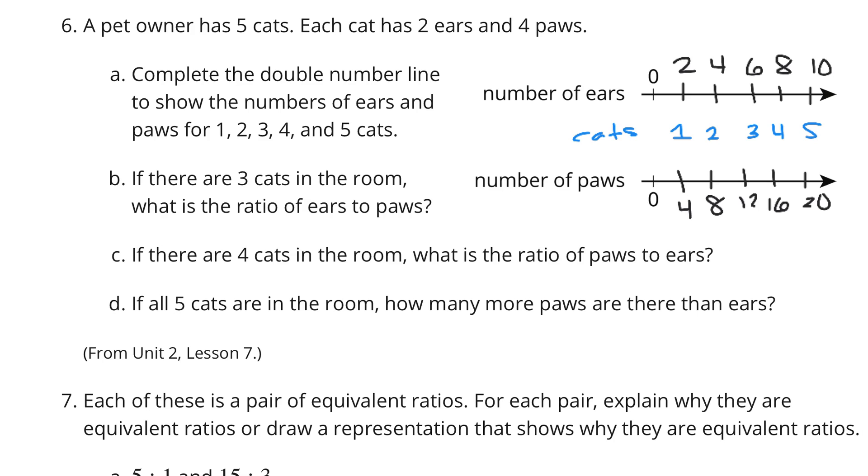You can see the two to four ratio here. If there are three cats in the room, what is the ratio of ears to paws? Here's our three cats. The ratio of ears to paws is six to 12. If there are four cats in the room, what is the ratio of paws to ears? Now, paws to ears would be 16 to 8. If all five cats are in the room, how many more paws are there than ears? There are 20 paws and 10 ears. So 20 minus 10 is going to be 10 more paws.